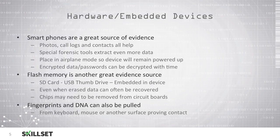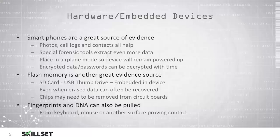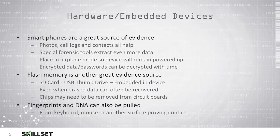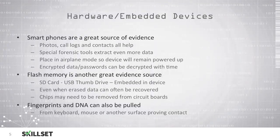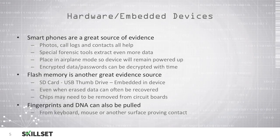Flash memory is also a great source of information. You could find information on an SD card embedded in a cell phone, or on a USB thumb drive on the desk near the computer you are seizing. Even when an individual deletes information from flash media it can often be recovered. You may need to use an advanced forensic process such as chip-off forensics, where you physically remove the chips from the device's circuit board and use a special reader to read the content directly off of the chip.